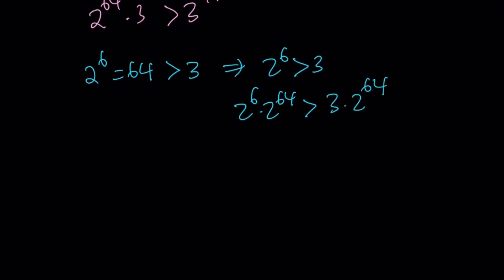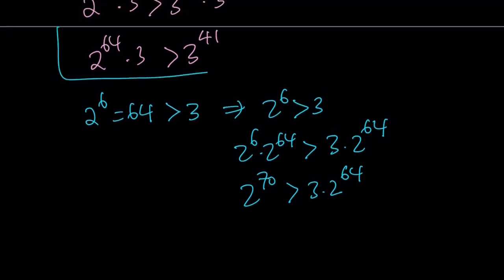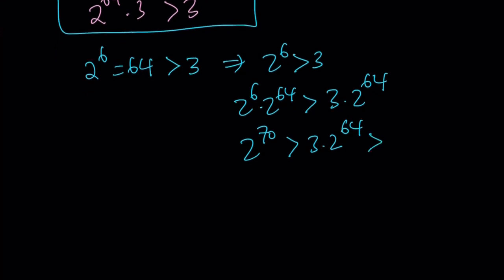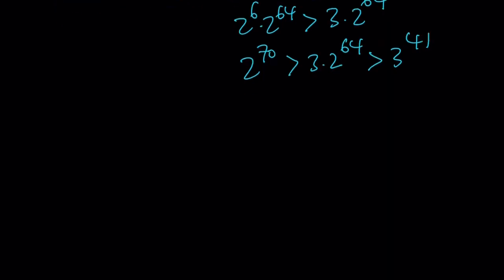On the left-hand side, I'm getting 2 to the power 70 — yeah, that's what I was looking for. And on the right-hand side, we get 3 times 2 to the power 64, not 3 to the power 41. But we already know that 2 to the power 64 times 3 is greater than 3 to the power 41, therefore we can write that as another inequality. And bingo — that gives us what we're looking for. So the conclusion is 2 to the power 70 is greater than 3 to the power 41.